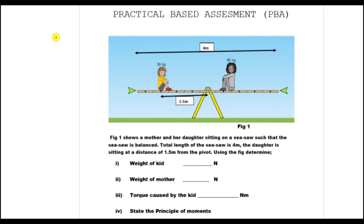We chose a mother and her daughter sitting on a seesaw. We need to find out the weight of this object. It is 30 grams of mass, so if you multiply 30 with the acceleration due to gravity, which is 10, it will be 300 newtons. Similarly, the weight of the mother is 60 kg of mass, so the weight is 600 newtons.